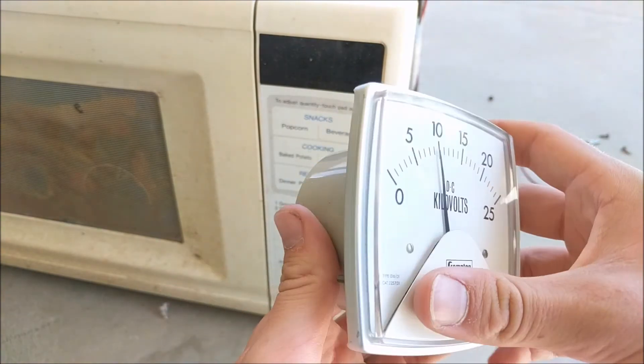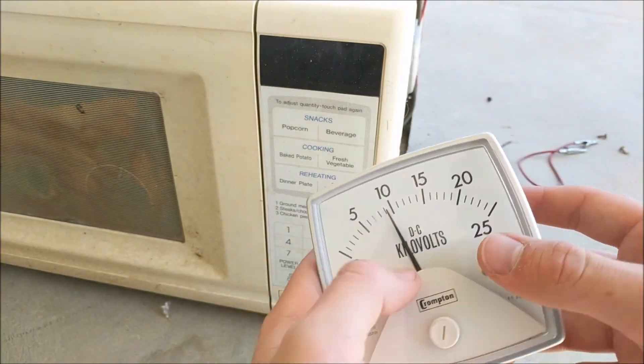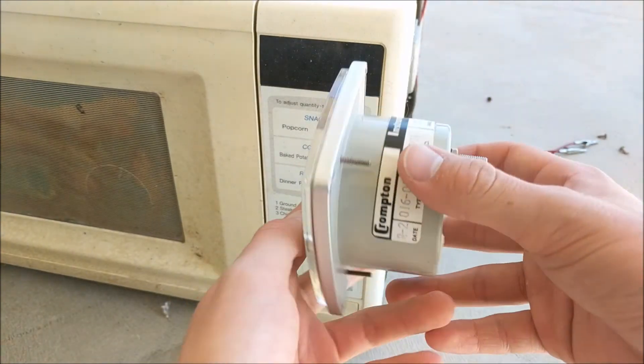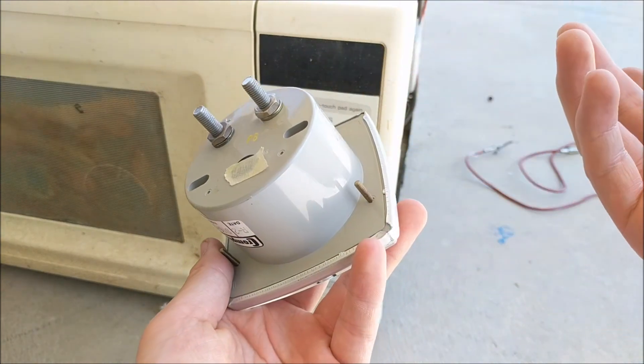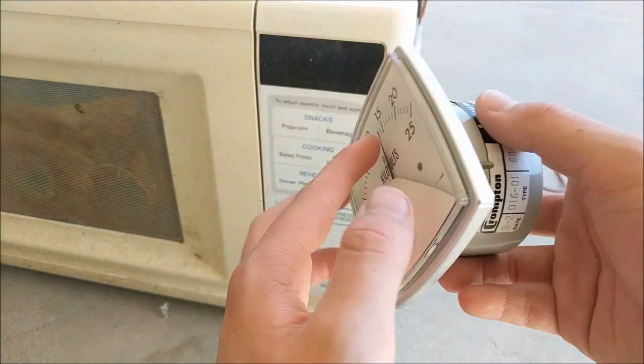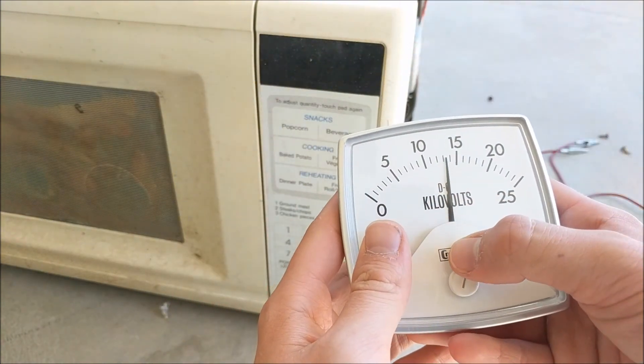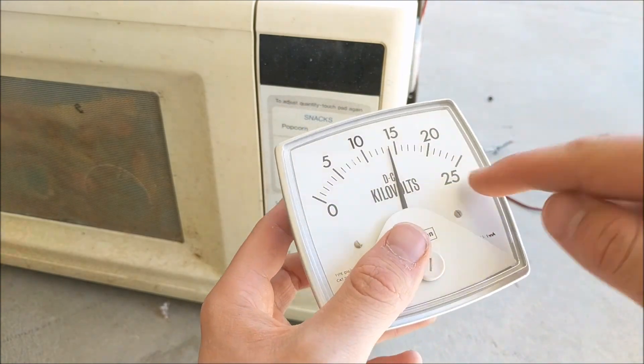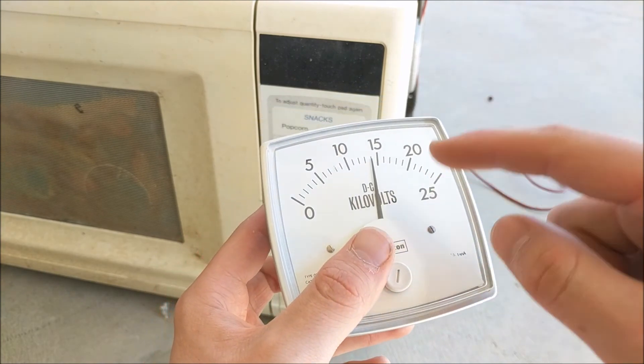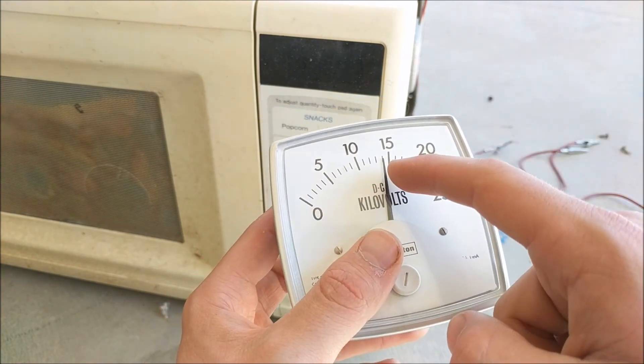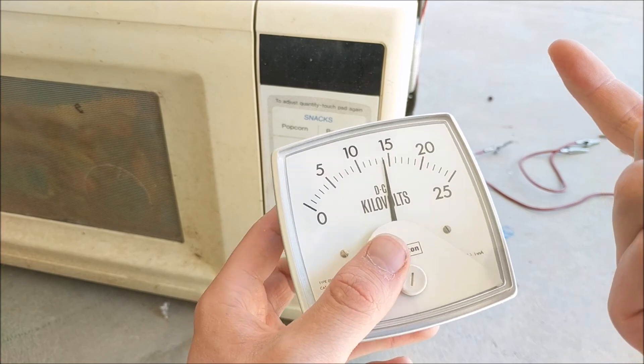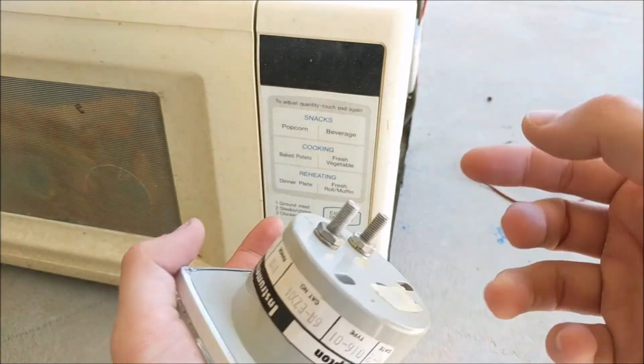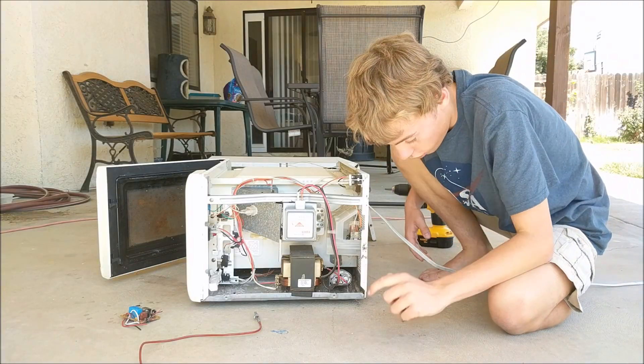As a separate note, I also tried to hook up my DC kilovolts gauge to the microwave to see the actual voltage produced at the capacitor. But sadly, this didn't turn out so well. And even though the microwave is well under 25 kilovolts, it broke the needle inside, and now it's stuck somewhere between 10 and 15. So, I guess that's life. That smells bad.